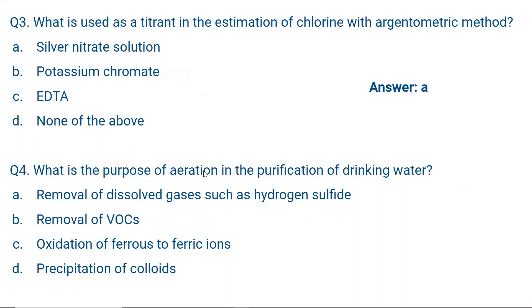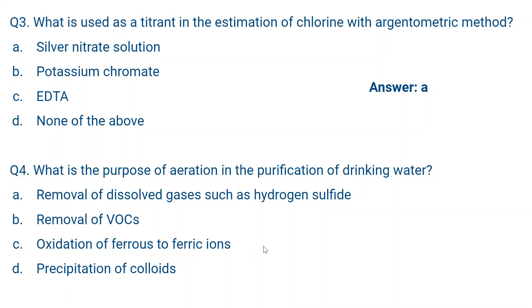Question number four: What is the purpose of aeration in the purification of drinking water? Options are: A — removal of dissolved gases such as hydrogen sulfide; B — removal of volatile organic carbons; C — oxidation of ferrous to ferric ions; D — precipitation of colloids. All of these partly happen during aeration.